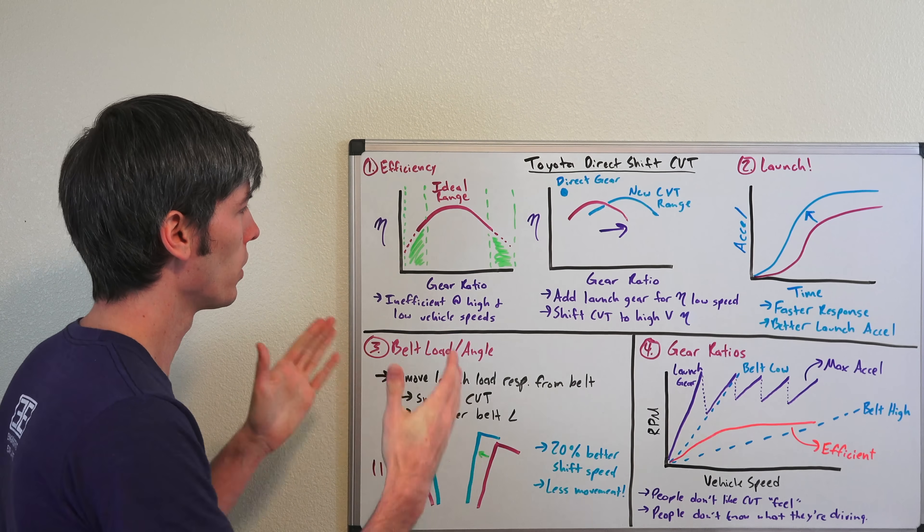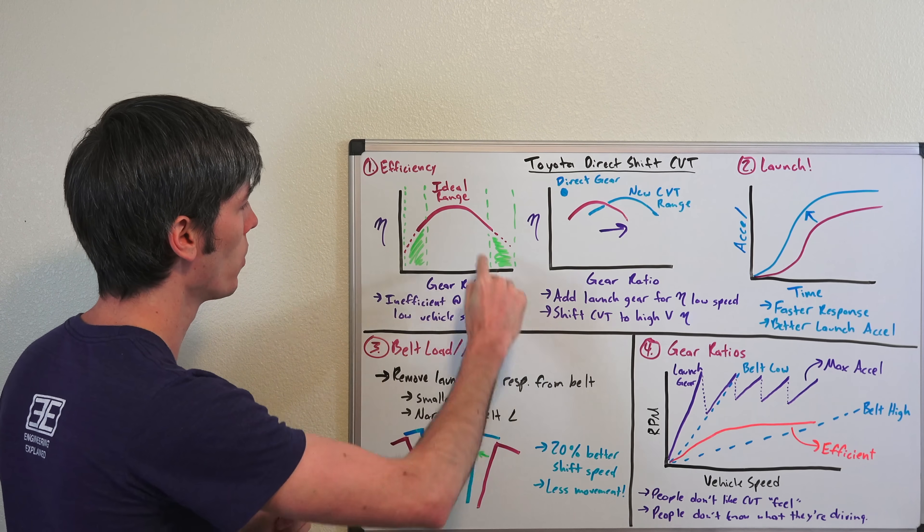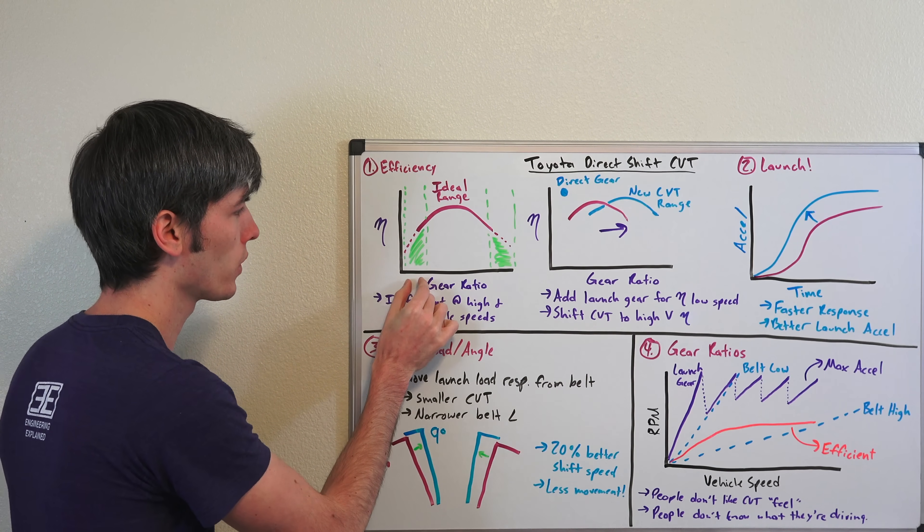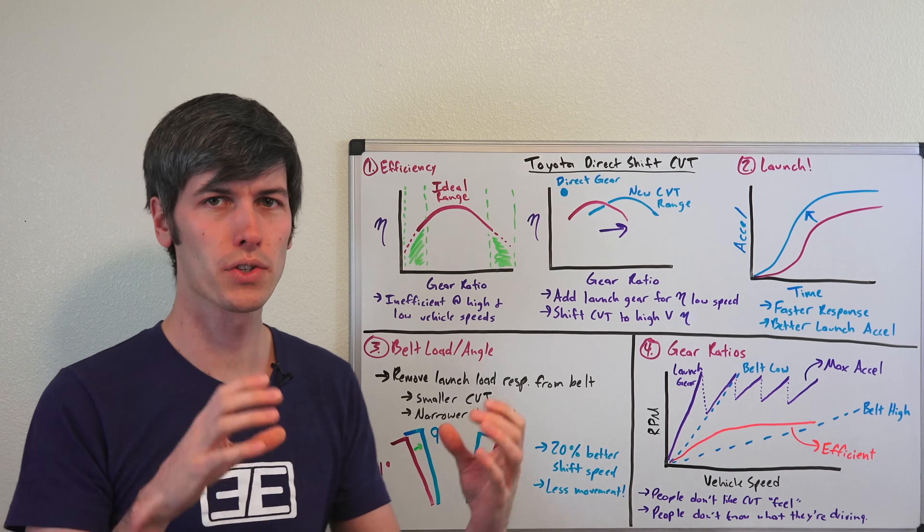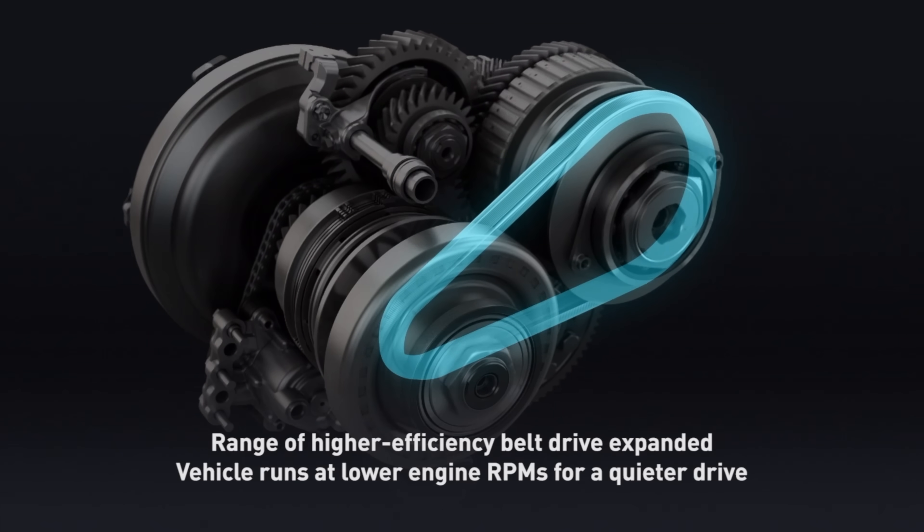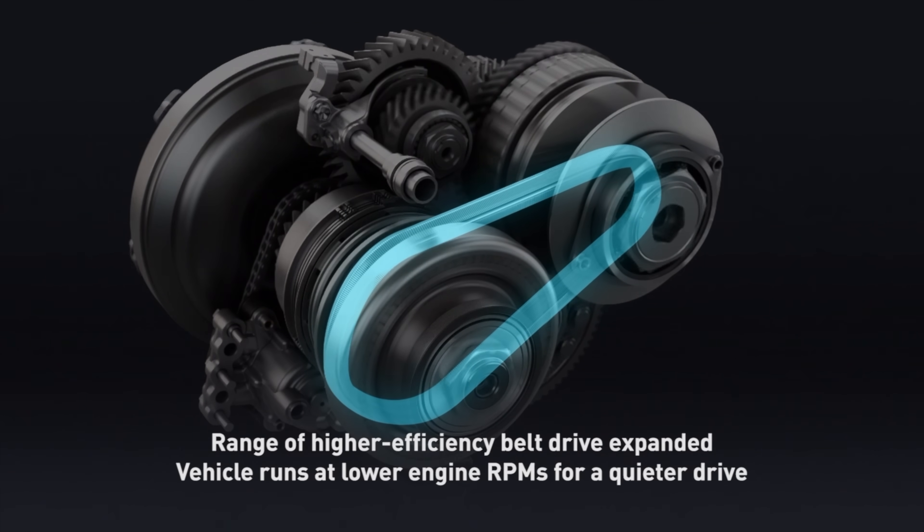So how does this all work? If you look at a CVT and you look at its gear ratio versus its efficiency curve, when it's on the extreme ends of that gear ratio, when it forces one of the ends of that pulley to be at a super narrow radius for that belt to go around, then it's not super efficient in that range.